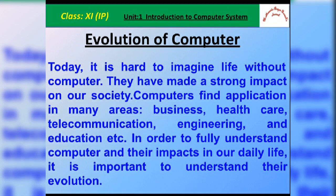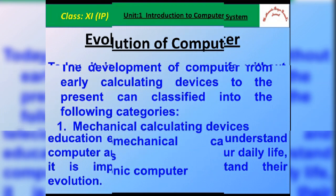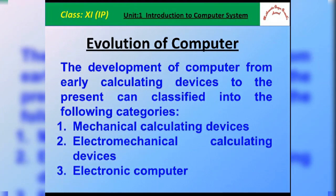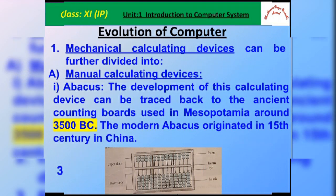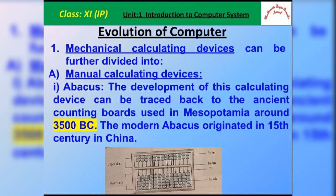The development of computers from early calculating devices to the present can be broadly classified into some categories. The first one is the mechanical calculating devices, then electromechanical calculating devices, and thirdly the electronic computers. The computers we use nowadays evolved through mechanical calculating devices, then electromechanical calculating devices, and then we get the electronic computers.